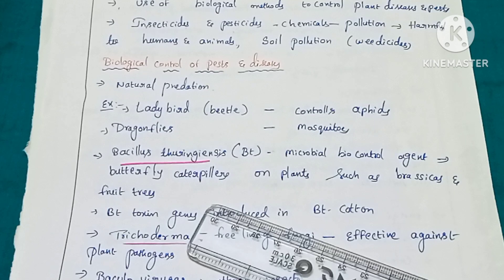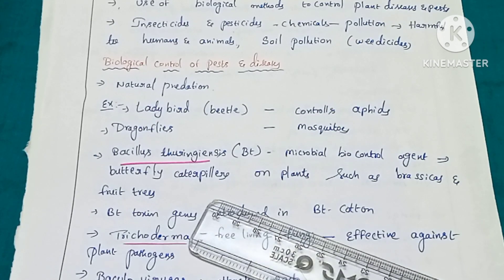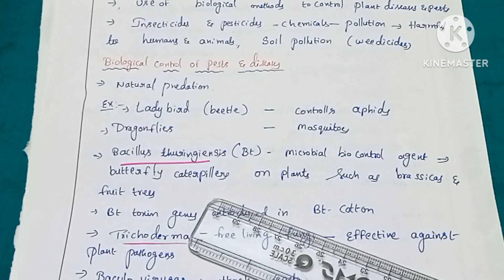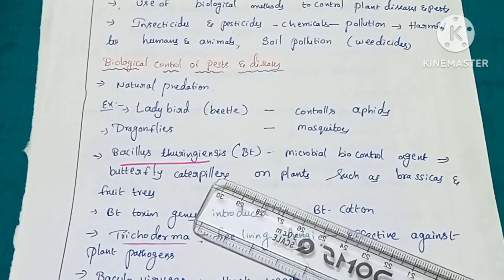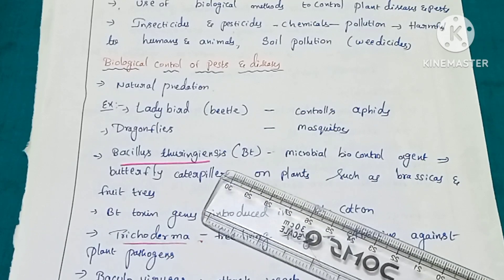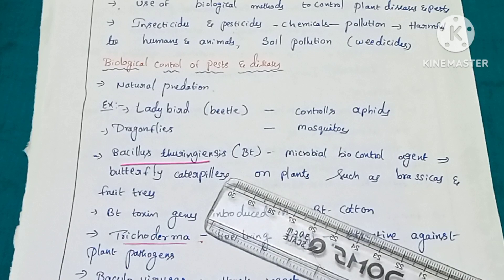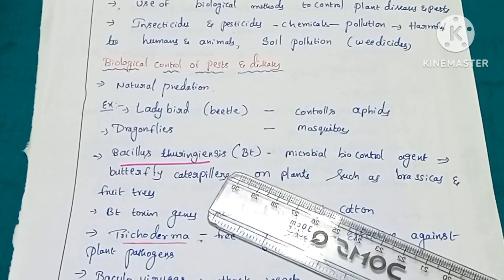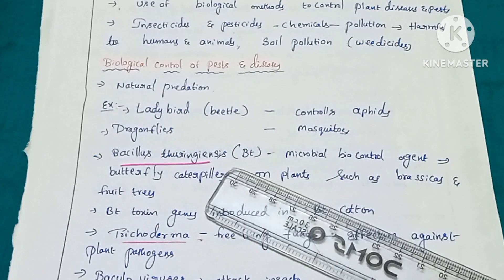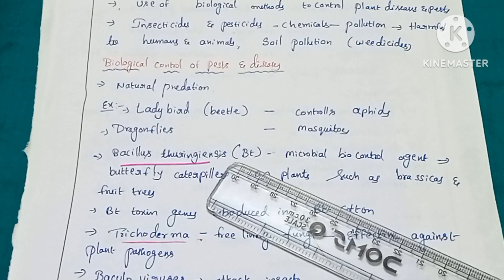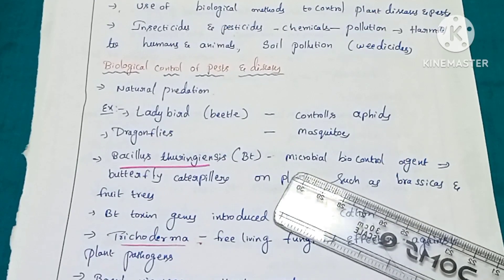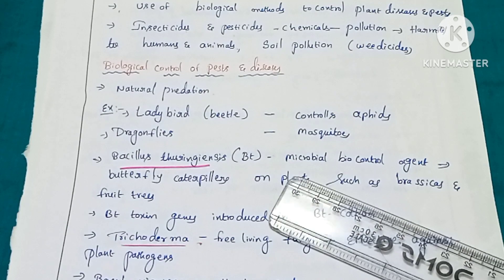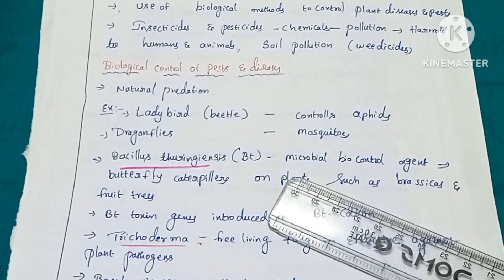Bacillus thuringiensis spores are available in the form of sachets. These spores are added to water and sprayed onto plants. Whenever the butterfly caterpillars consume those leaves or plant parts, the bacterial spores enter into the gut of the insect. The alkaline conditions in the gut activate the spores, which then release endotoxin. This endotoxin affects the gut of the insect and kills the caterpillars.